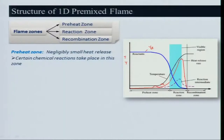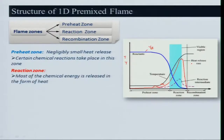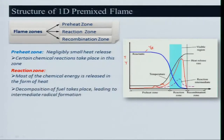The reaction zone is very thin compared to the preheat zone. Most of the chemical energy is released as heat in the reaction zone. Fuel decomposition actually takes place at the beginning of or just before the reaction zone — for example, propane is converted into methane and other species. These pyrolysis products create radicals that are consumed in the reaction zone.